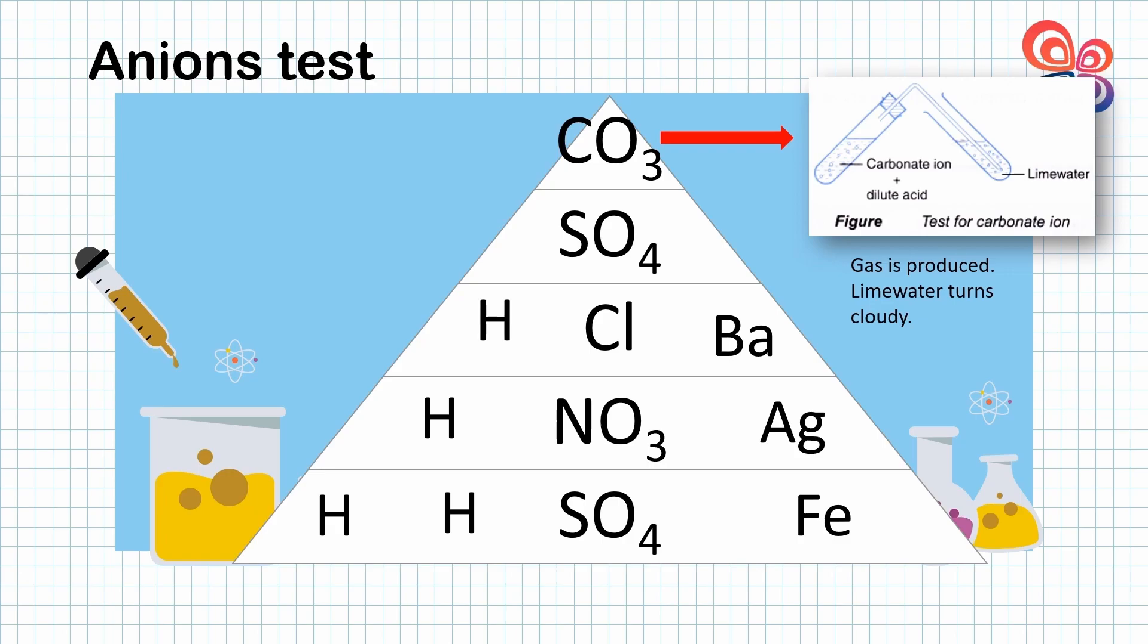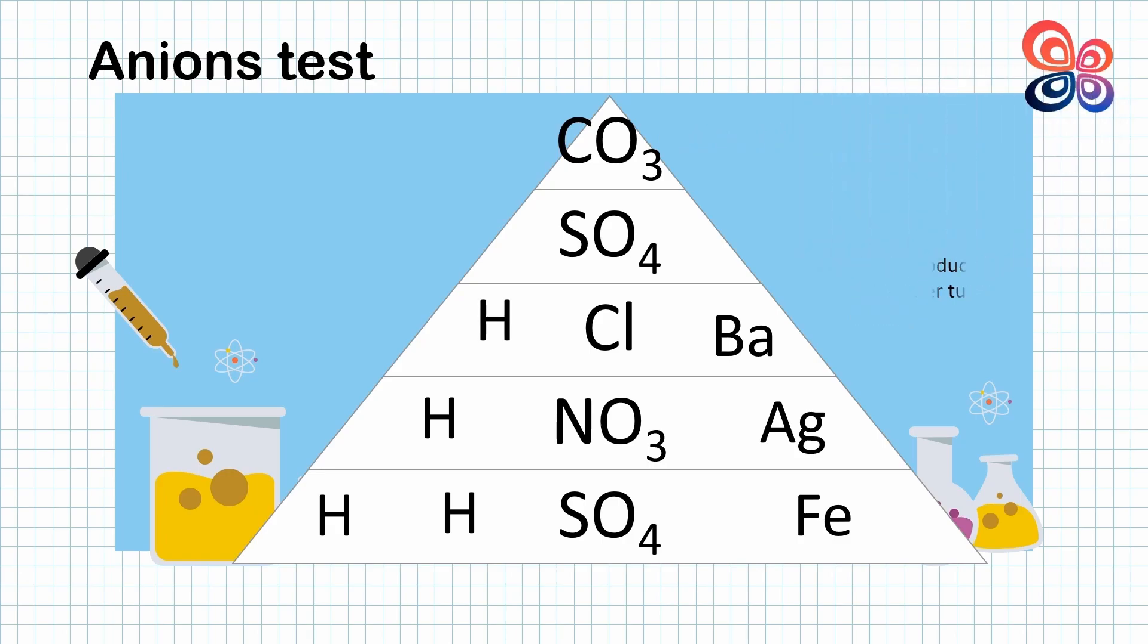For the next test is sulfate. To test the presence of sulfate, please look at below the sulfate. It is chloride ion. So for testing the presence of sulfate, first, dilute hydrochloric acid is added to the sulfate salt.